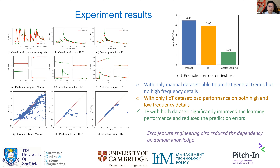The third experiment first trains the model using the manual dataset, then uses transfer learning to adopt the trained parameters to a new model, and then retrains using IoT data. The result is quite good — it captures both the general trend and the detailed information, with high accuracy. The bar chart shows the mean absolute error for different scenarios, and after transfer learning the error is significantly reduced. This is quite an effective way to overcome the challenge of data shortage and low quality. No feature engineering was used during deep learning training, which reduces dependency on domain knowledge for feature selection.